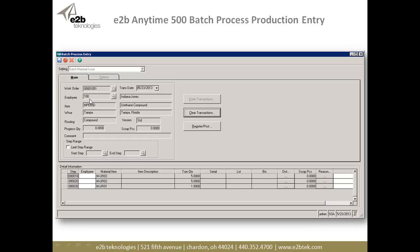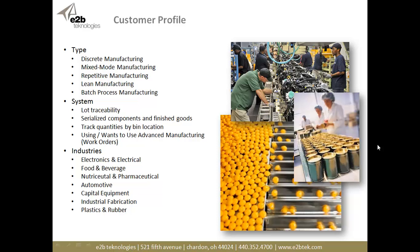We enter our employee information, which can default down to the bottom of the screen. We put the finished good we're producing, which defaults from the work order along with the routing information. Then you click the Enter Transaction button — which is grayed out since I've already clicked it — and it puts the transaction quantities down here at standard, which I can then override. So even though it's telling me I need five of MUR 03, five of MUR 02, and one unit of MUR 01, I can still change those values before I register and post those transactions.